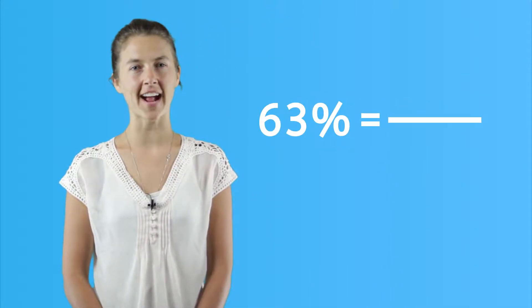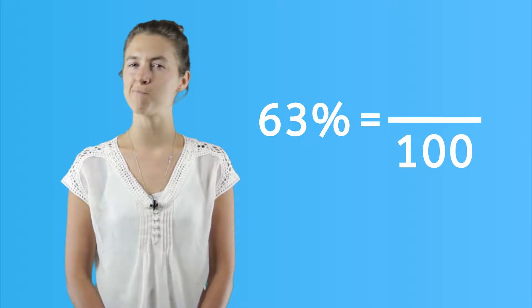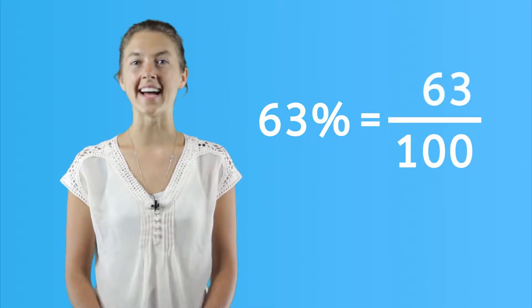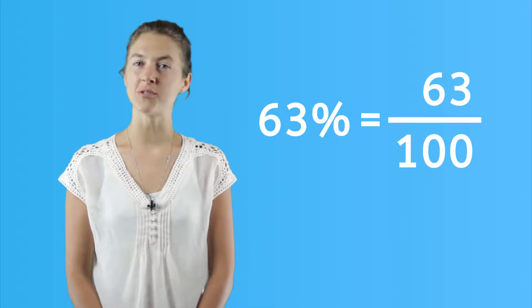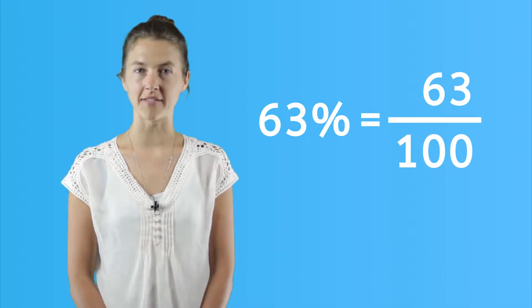We can also work it in reverse. How would we write 63 percent as a fraction over 100? That's correct, 63 over 100, which means 63 parts out of every hundred.